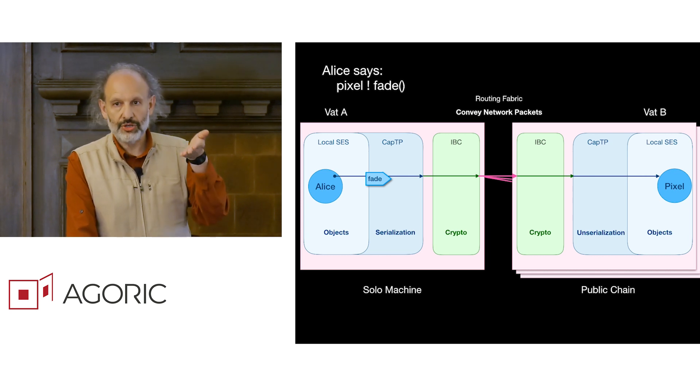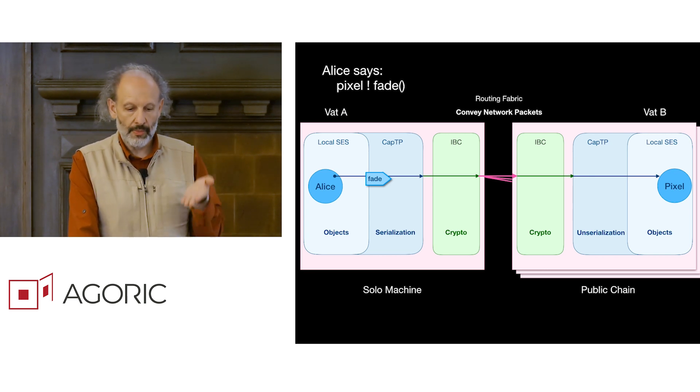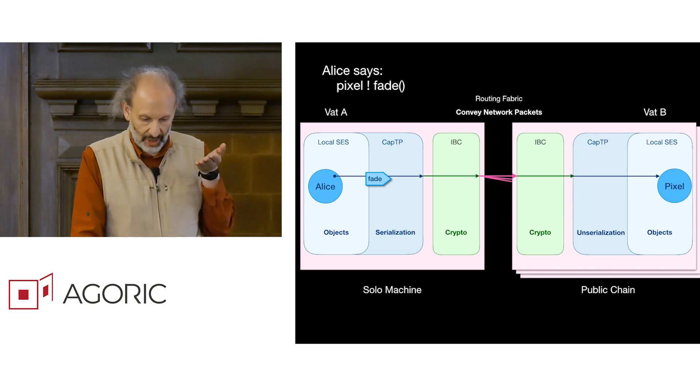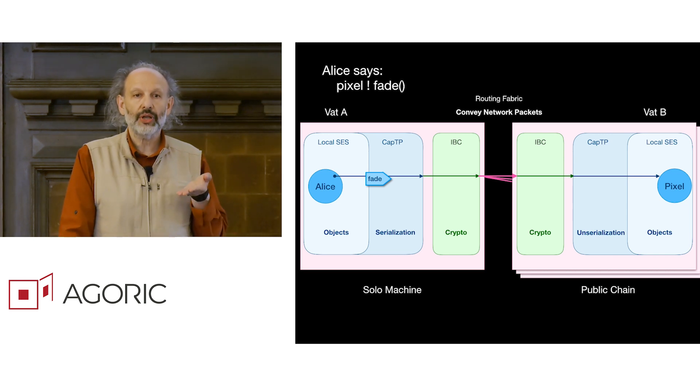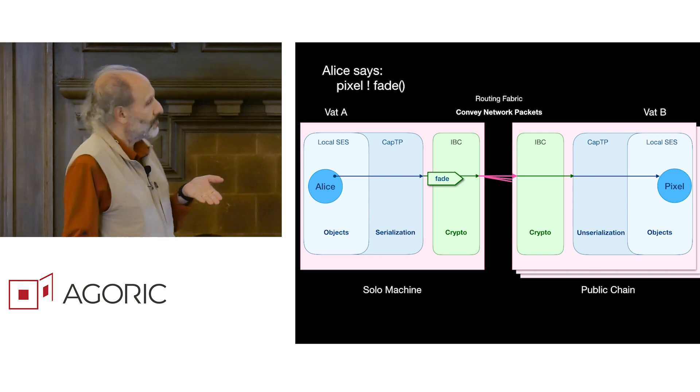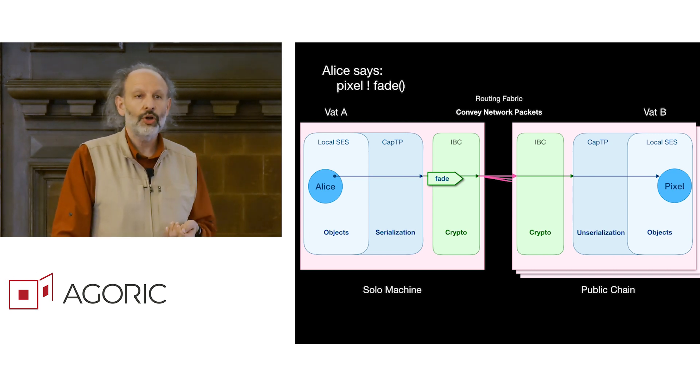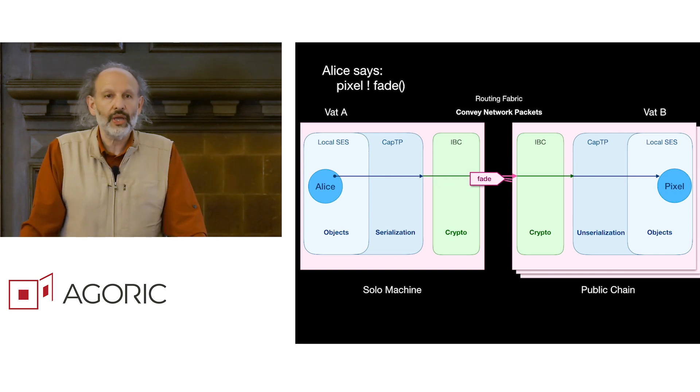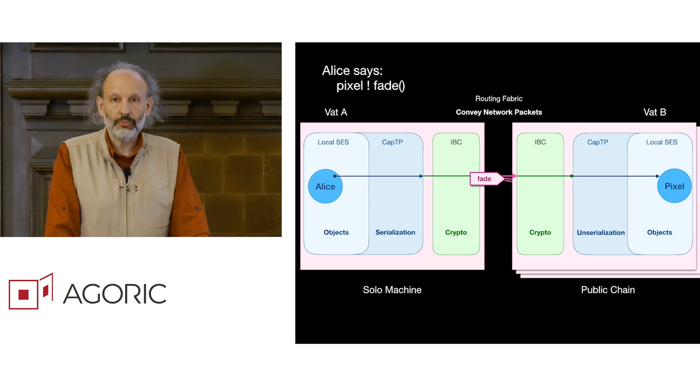So when Alice sends that message, she's sending it as an object message as if the pixel object is local. That object message makes it to the serialization layer, which is our CAPTP system for the capability transport protocol. And what that CAPTP layer does is it serializes the object message into a serialized blob. The serialized blob is handed over to the IBC layer, the inter blockchain protocol, which Agoric and Cosmos are collaborating on. And what that does is it adds the crypto so that the message will be recognized as legitimate by the destination. And then it sends it between machines.